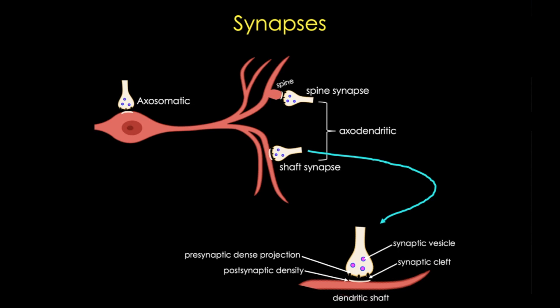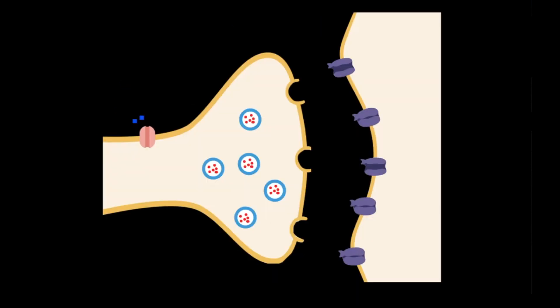So let's see how that works in a generic synapse. Here in a very highly simplified cartoon, we have the presynaptic terminal, the synaptic cleft, and the postsynaptic terminal or density.